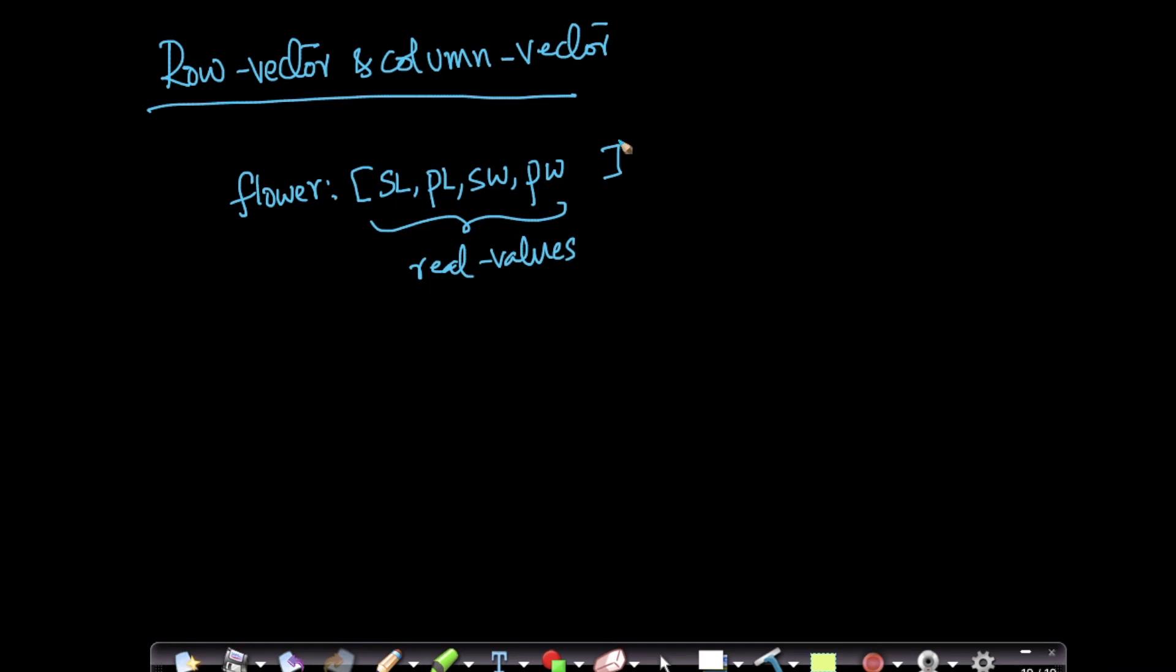So given any data point like this, we write a data point typically, I am just introducing some simple notation, we write the ith data point as xi, and we represent it like this.